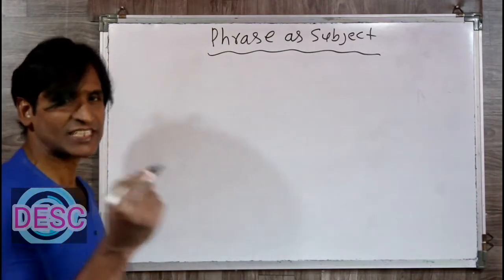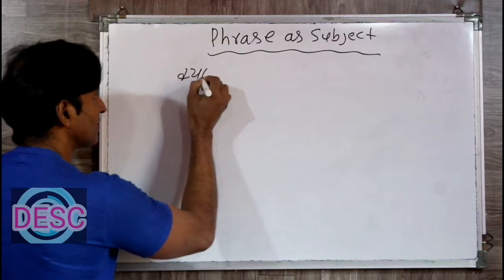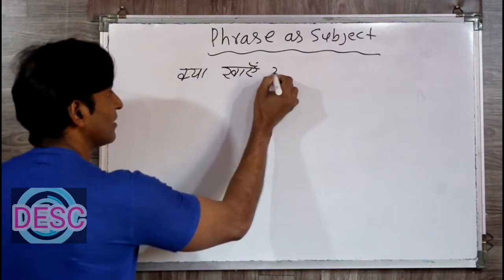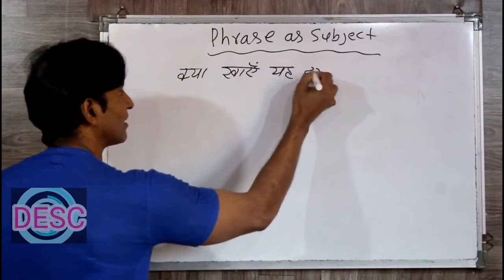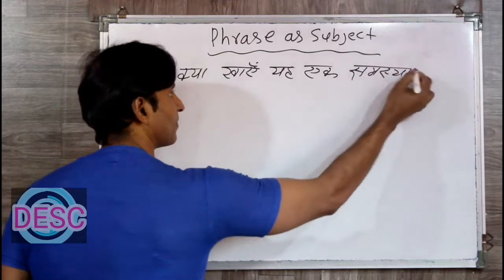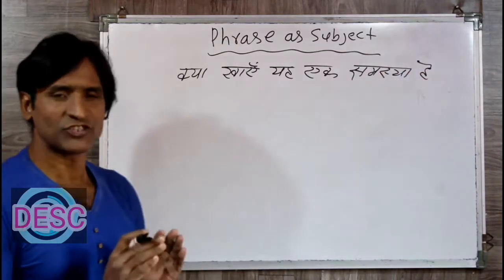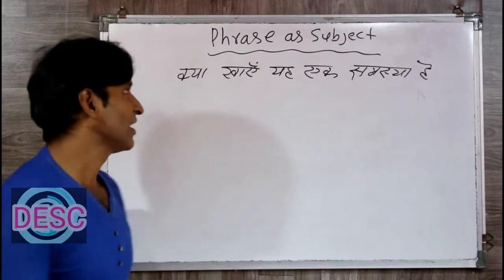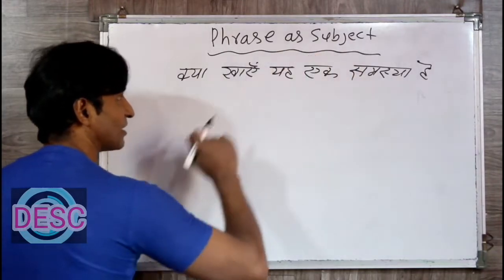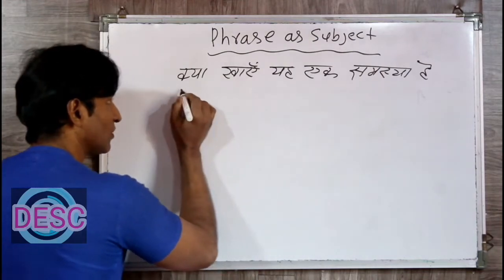Phrase as clause — these are mixed in tense with a sentence. Kya khaye? Ya ek samasya hai. Take a minute. This is the phrase as a clause, means phrase as subject. Kya khaye — ya ek samasya hai — what to eat is a problem.